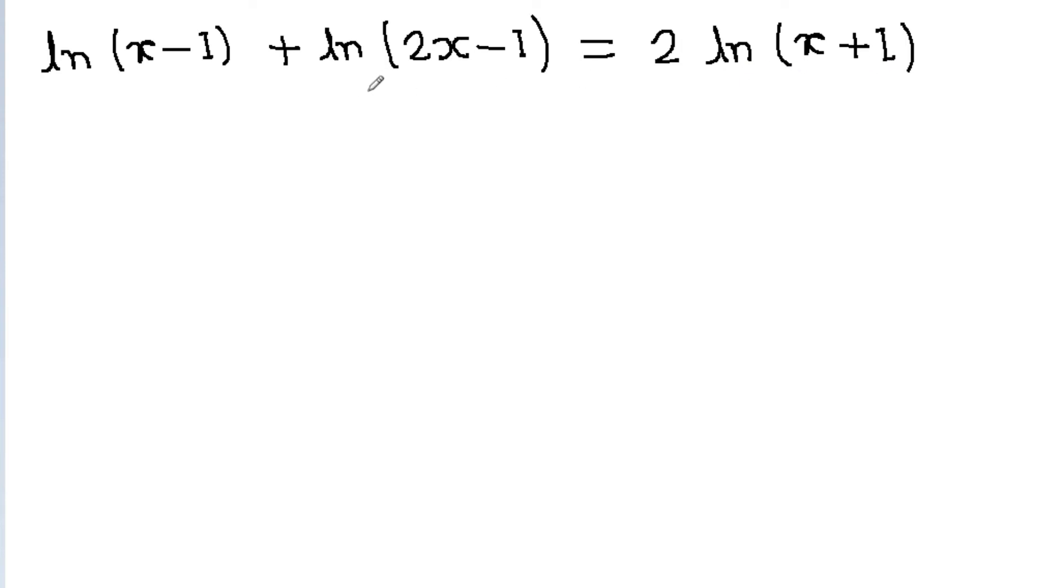Here we can rewrite the equation as ln(x-1) + ln(2x-1), which can be written as ln[(x-1)(2x-1)], is equal to 2 times ln(x+1), which can be written as ln(x+1) squared.